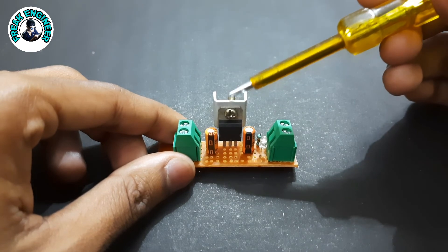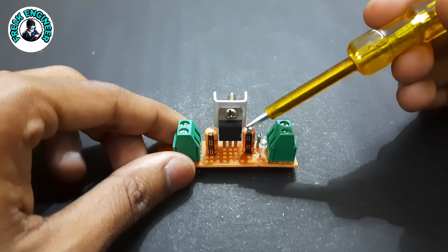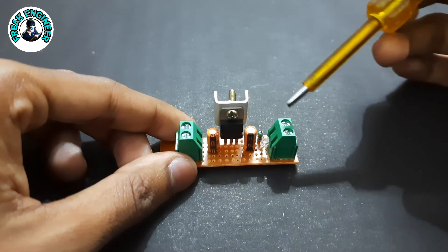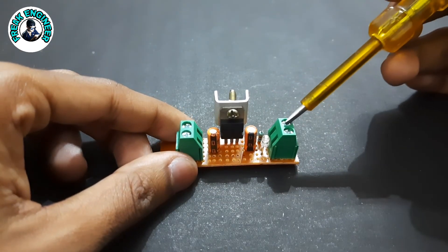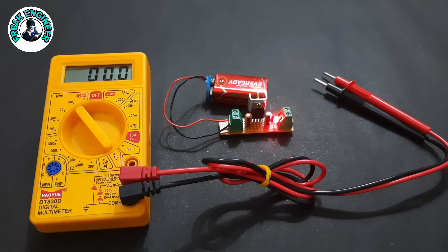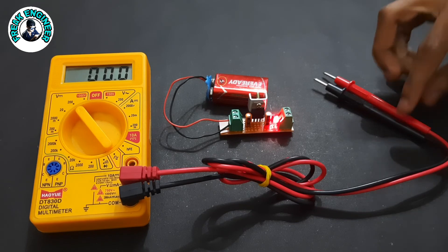This is 7805 IC. Here we have the output capacitor with the indication LED and the protecting resistor, and here we get our output of 5 volts. I have added 9 volt battery as input to this circuit and I will show you the output in multimeter.